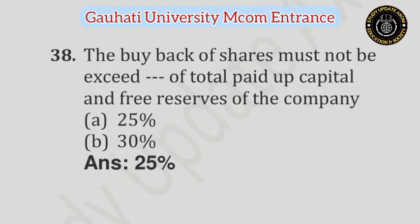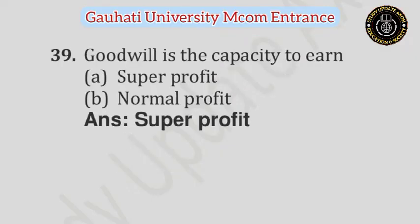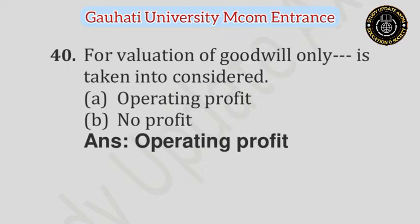Question number 38: The buy back of shares must not exceed dash of total paid up capital and free reserves of the company — Option A: 25%, Option B: 30%. Answer is 25%. Question number 39: Goodwill is the capacity to earn — Option A: Super profit, Option B: Normal profit. Answer is Super profit. Question number 40: For valuation of goodwill, only dash is taken into consideration — Option A: Operating profit, Option B: No profit. Answer is Operating profit.